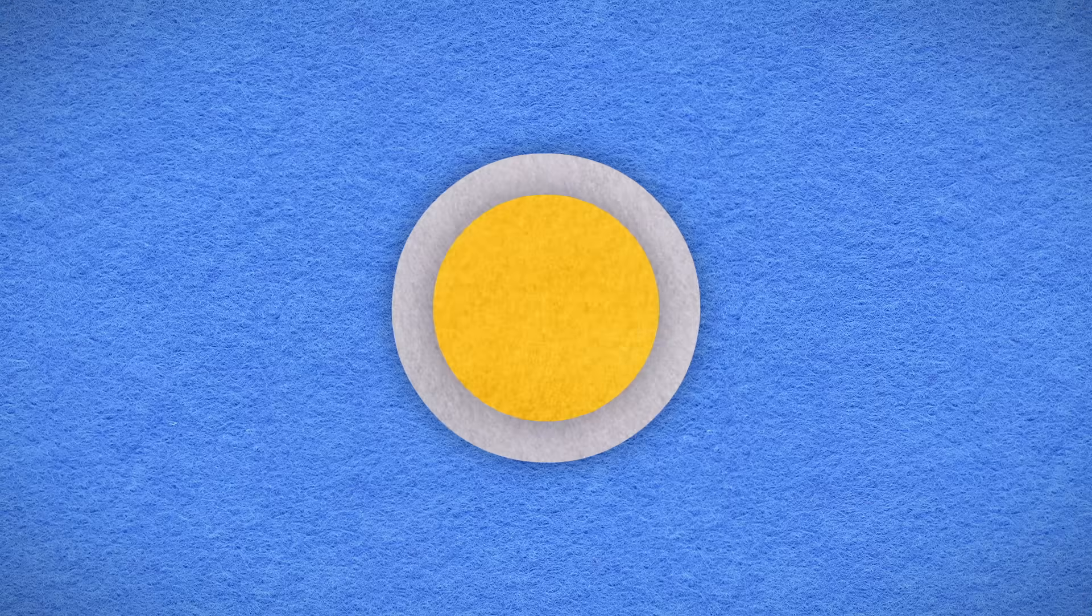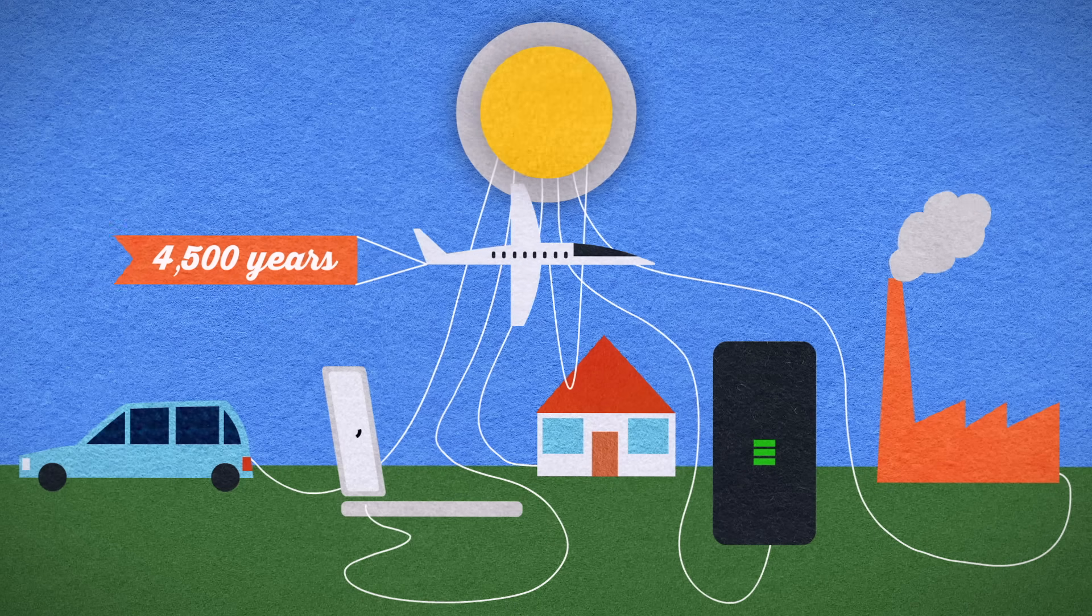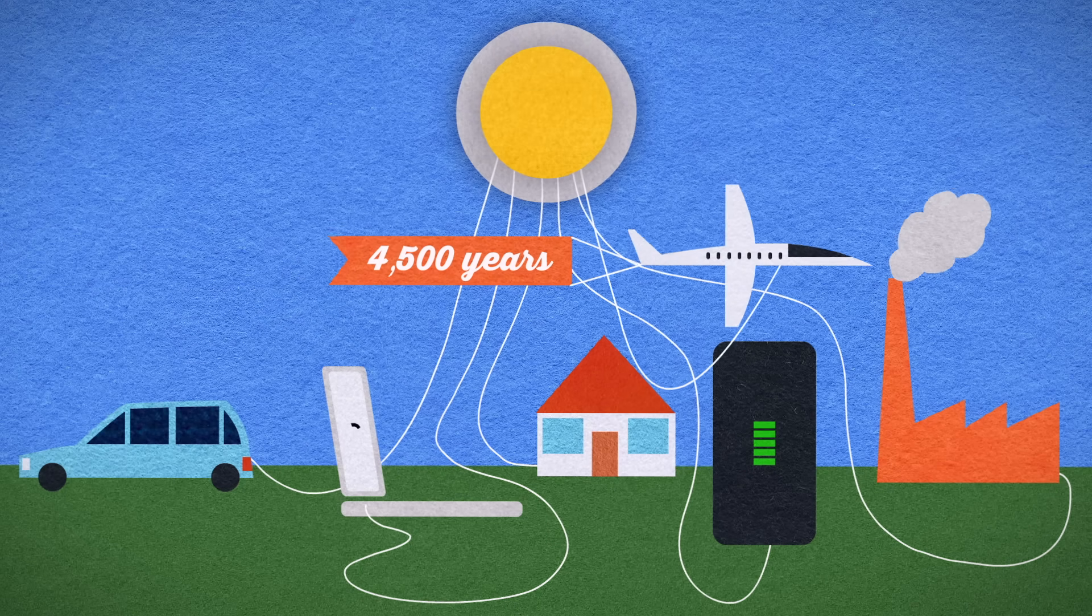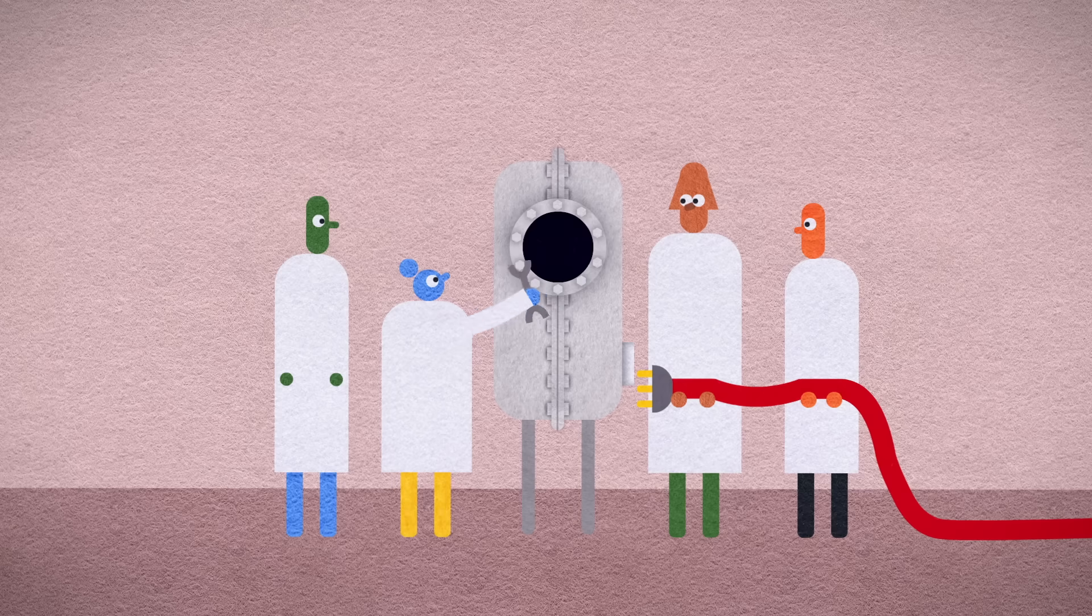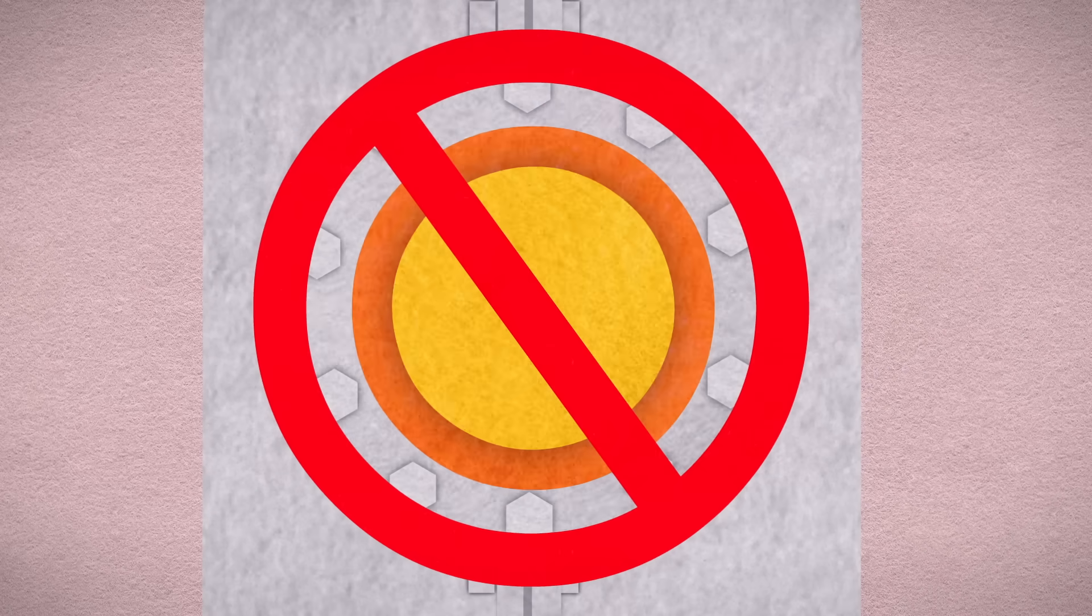In the time it takes to snap your fingers, the Sun releases enough energy to power our entire civilization for 4,500 years. So naturally, scientists and engineers have been working to build a miniature star here on Earth to plug into our power grid. And the thing is, we already kind of have. It just doesn't look like a tiny star floating in a lab.